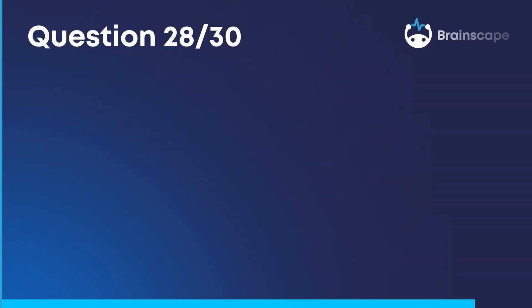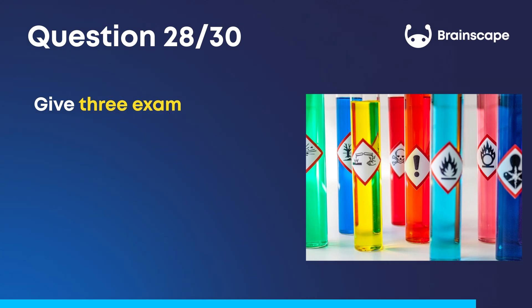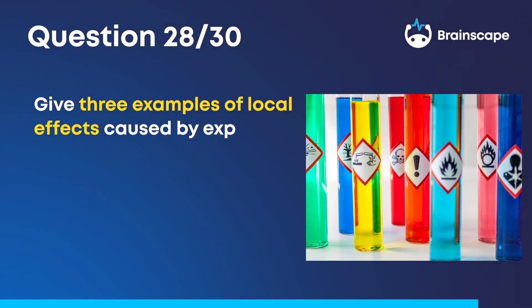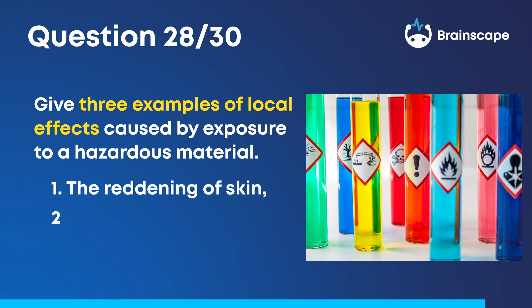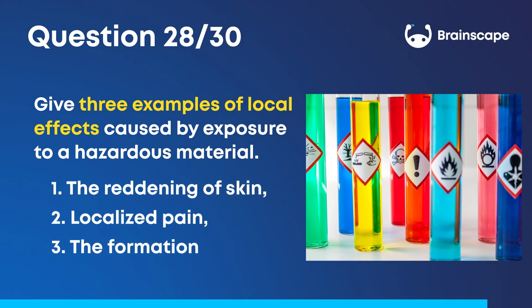Question 28. Give three examples of local effects caused by exposure to a hazardous material. One, the reddening of skin. Two, localized pain. And three, the formation of blisters.